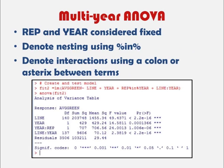We may now want to look at a multi-year ANOVA. In this case, we want to consider rep and year as fixed. To denote nesting, as in the case of rep within year, we use the syntax %in%. To denote interactions, you can use either a colon or an asterisk. We see a similar ANOVA output as we had for the single year, along with our significance codes. We see significant effects of line, year, rep within a year, and line-by-year interactions.